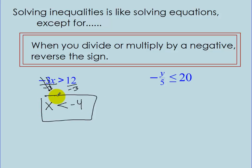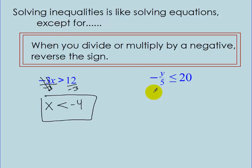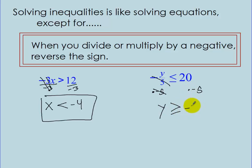x is less than negative 4. On this one, negative y-fifths is less than or equal to 20. I'm going to multiply by negative 5. This cancels out the negatives and the denominator. I'm left with y greater than or equal to 20 times negative 5, which is negative 100. So you've got to flip the sign — reverse the sign.